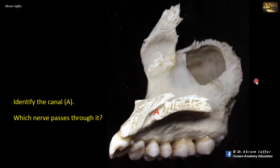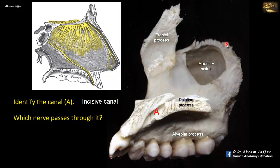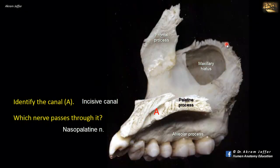Identify canal A and which nerve passes through it. Canal A is located in the maxillary bone. We are looking at the maxillary bone from the medial side. You can see the large maxillary hiatus leading into the maxillary sinus, the frontal process of the maxilla, the palatine process, and the alveolar process carrying the maxillary teeth. The canal is the incisive canal, passing from the nose to the hard palate. The nerve passing through it is the nasopalatine nerve, located on the nasal septum. It is a branch of the pterygopalatine ganglion in the pterygopalatine fossa and gains access to the nose through the sphenopalatine foramen.